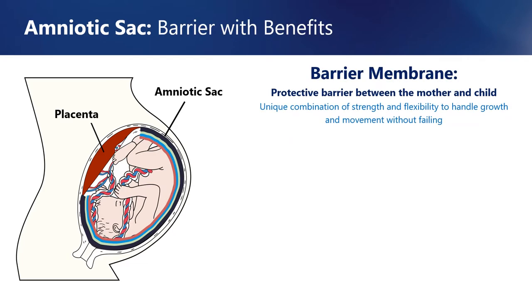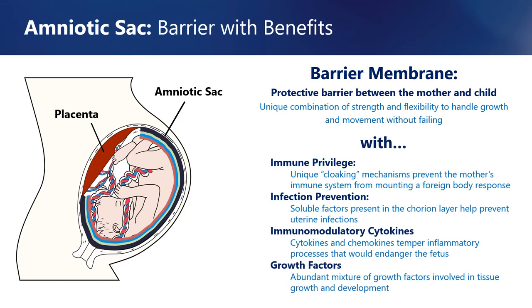Each layer provides important physical and biological properties to the amniotic sac. The amniotic sac is, first and foremost, the physical barrier between the mother and developing child, performing the critical function of protecting the child throughout pregnancy. In addition to possessing a unique combination of strength and flexibility, the amniotic sac possesses unique biological characteristics that help to protect the pregnancy. The amniotic sac employs cloaking mechanisms that effectively hide the developing child from the mother's immune system.